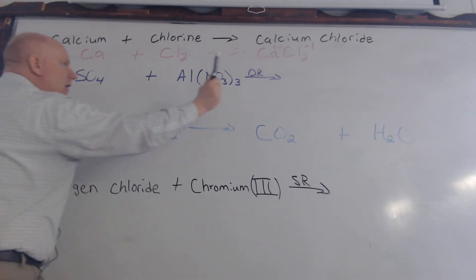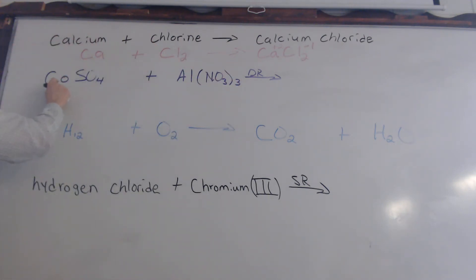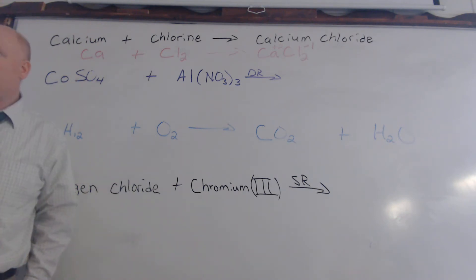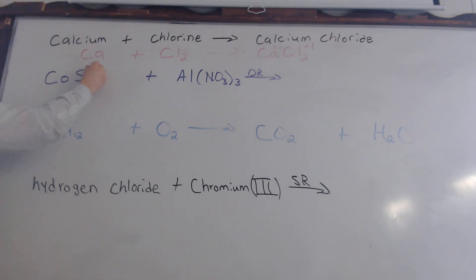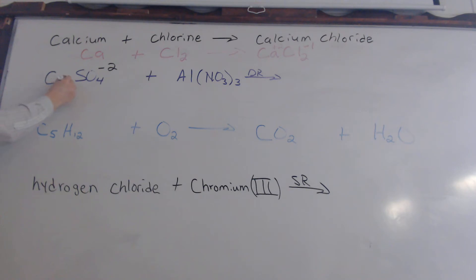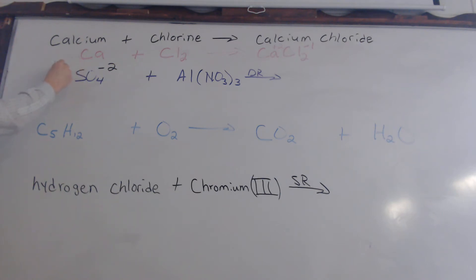We're told that CoSO₄ — if we had to name that, what would that be? CO is cobalt, and SO₄ is sulfate. What's the charge of the sulfate ion? We only have one cobalt atom. So what charge does that cobalt have? It has to have a positive charge — because it has to add up to zero. Cobalt can have more than one type of charge: it can be plus two or plus three.